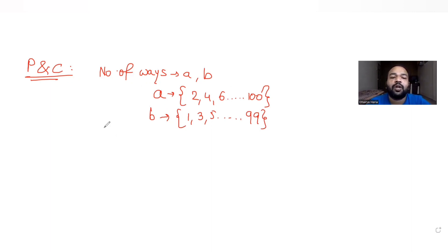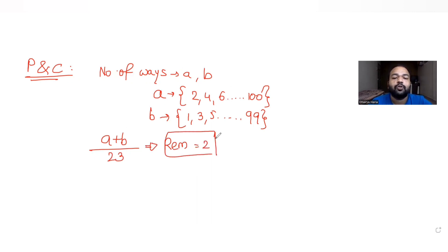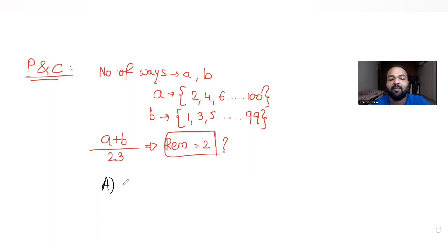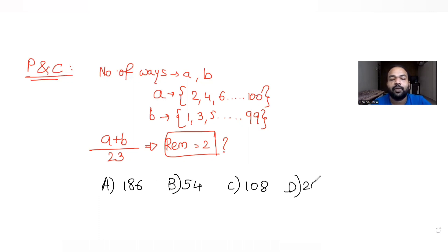We have to find the number of ways such that when the sum a+b is divided by 23, the remainder is 2. The four answer options given are 186, 54, 108, and a fourth option. We need to figure out which is correct.